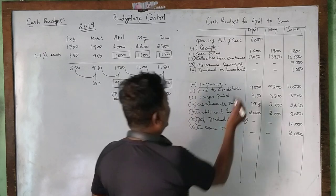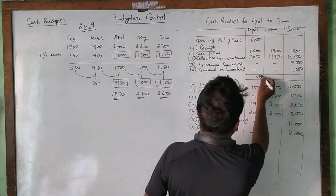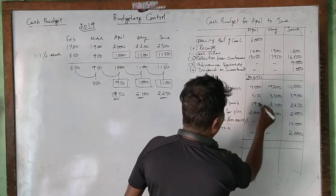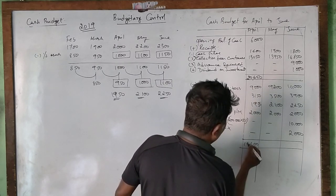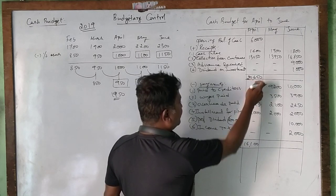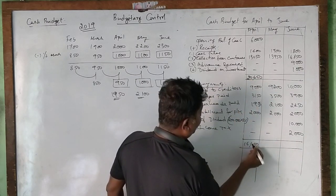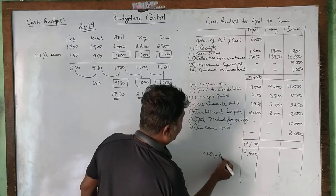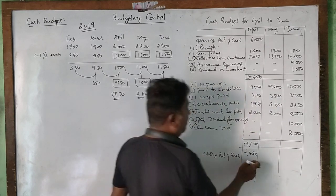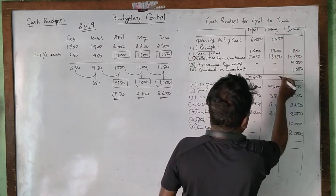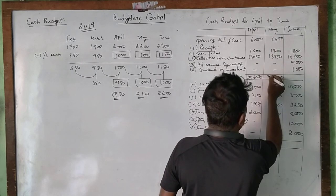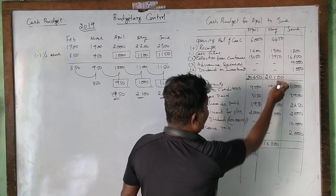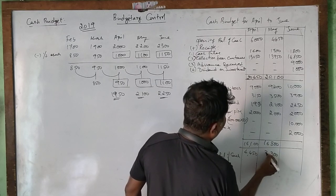Now calculating the totals for the cash budget. The total for one period comes to 20,650, and carrying forward gives 16,100. Computing the closing balance of cash for April: opening balance plus total receipts minus total payments gives a closing balance figure.